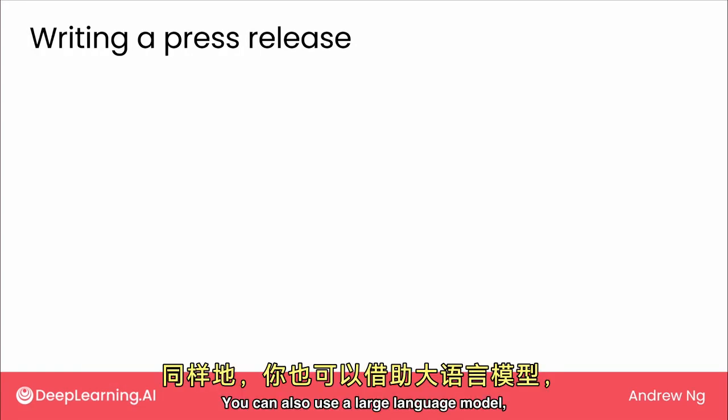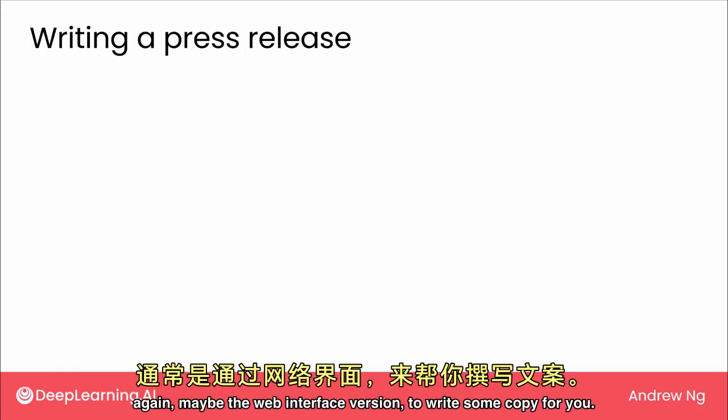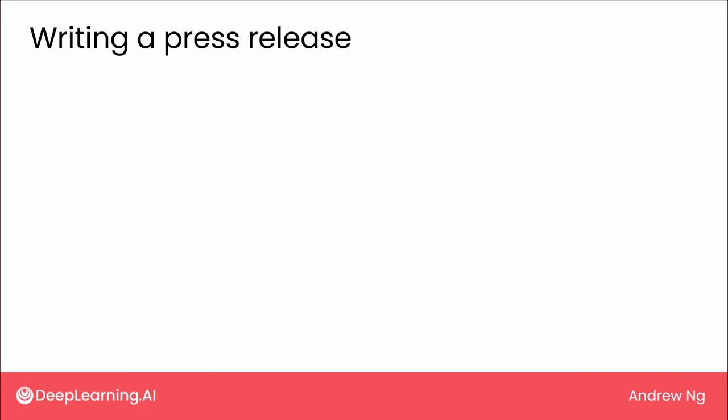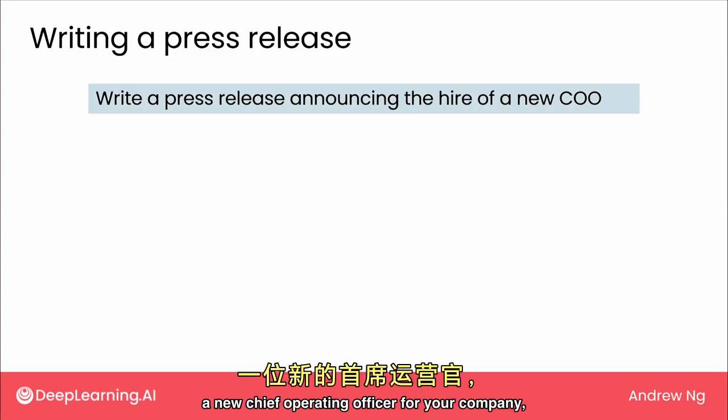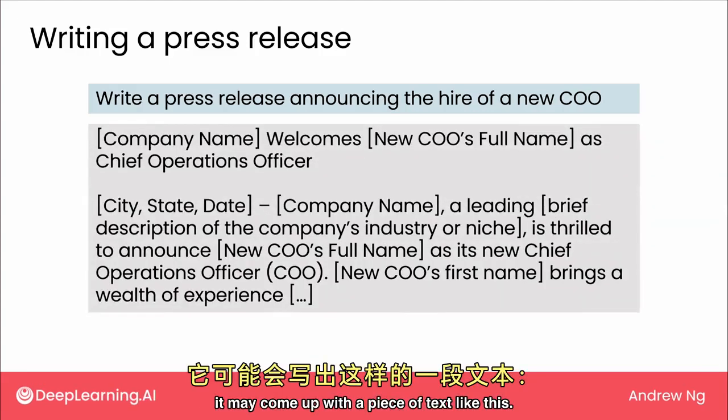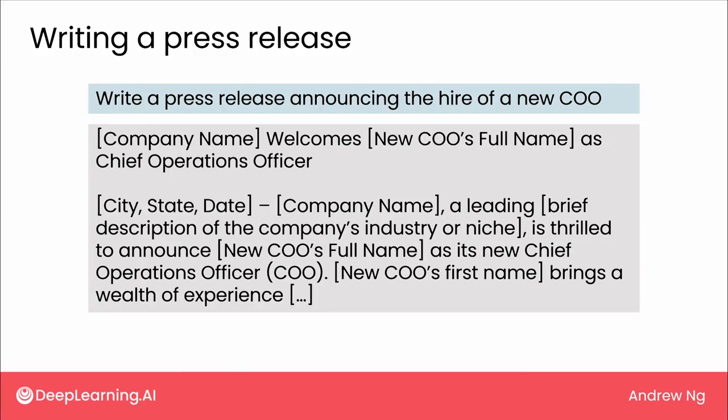You can also use a large language model — again, maybe the web interface version — to write some copy for you. Let's look at an example. If you were to ask it to write a press release announcing the hire of a new COO, a new chief operating officer for your company, it may come up with a piece of text like this.